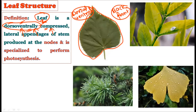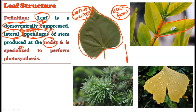The leaves are also lateral appendages. They are described as lateral appendages because from the stem these leaves are arising and growing laterally. That is why we describe them as lateral appendages of the stem, produced at the nodes. The stem of every plant is divided into nodes and internodes. The leaves are always born on the nodes, while on the internodes there are generally no leaves.